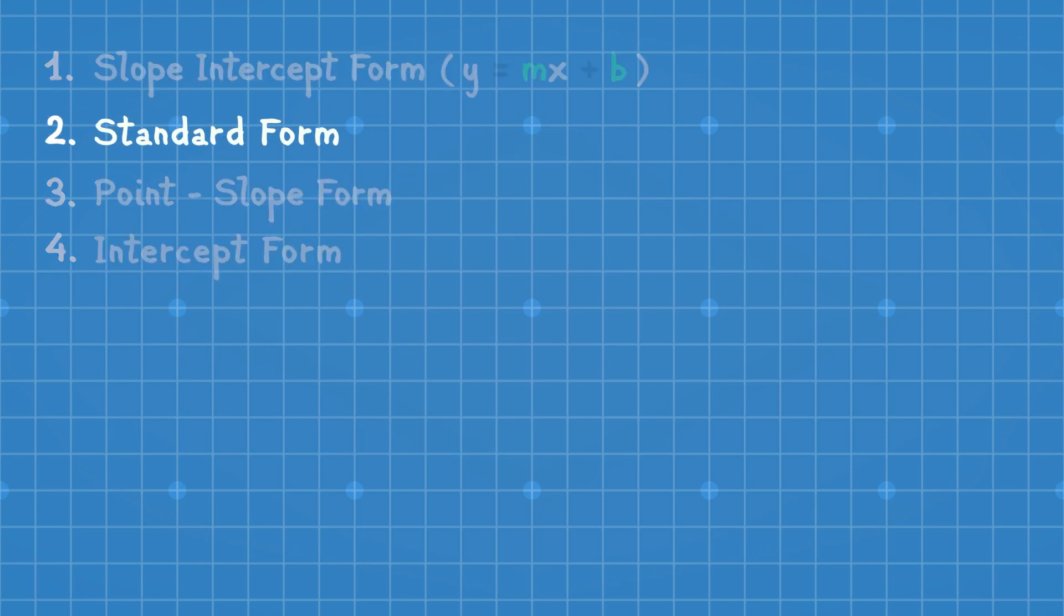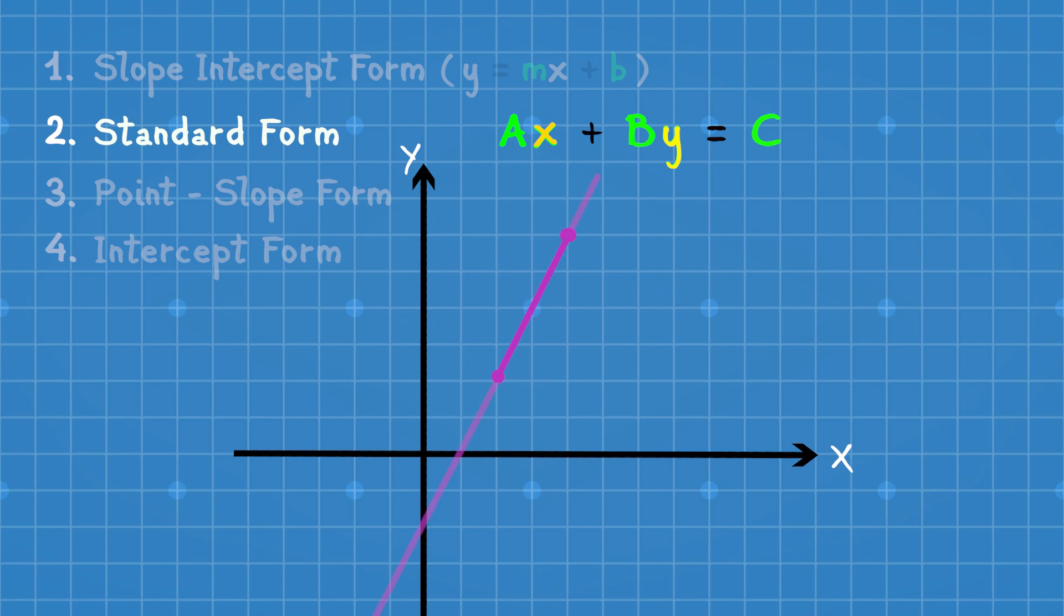In standard form, the equation is represented as Ax + By = C, where x and y are variables and a, b, and c are coefficients. To understand the standard form of linear equation, let's take a line segment between two random points. Extending it both ways, the line will intersect the x-axis and y-axis. The point where it intersects the x-axis becomes x-intercept, and the point where it intersects the y-axis becomes y-intercept.